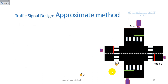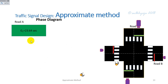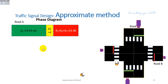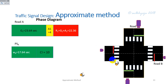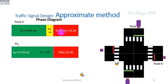The phase diagram for Road A: the green time for traffic is 23.64 seconds, the amber time is 4 seconds, giving a total green-plus-amber of approximately 27.6 seconds. The red time for traffic on Road A is 22.36 seconds. The traffic signal green and amber time for Road A equals the pedestrian green time for Road A, which is the red timing for traffic on Road B. Similarly, the red timing for Road A equals the pedestrian red timing on Road A and corresponds to the green time for traffic on Road B.